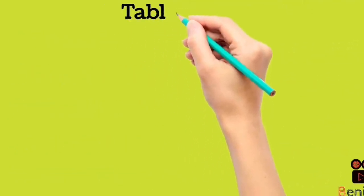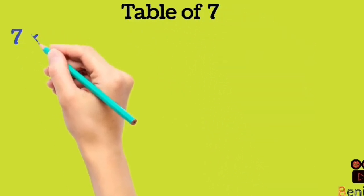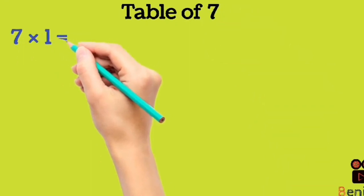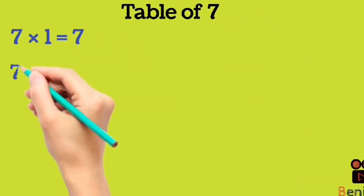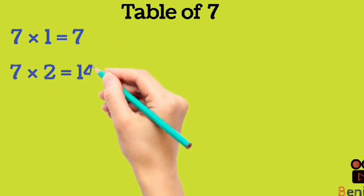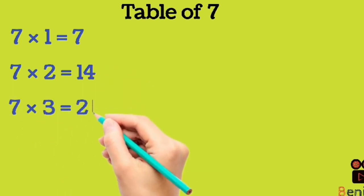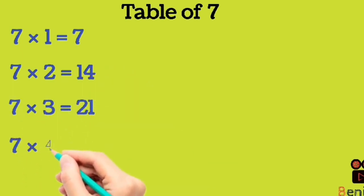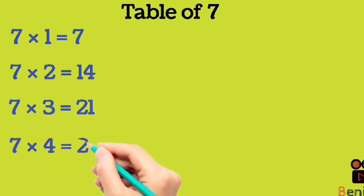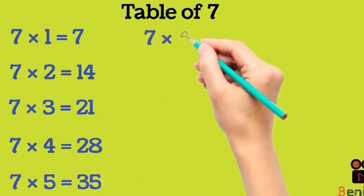Table of 7. 7 1s are 7. 7 2s are 14. 7 3s are 21. 7 4s are 28. 7 5s are 35. 7 6s are 42.